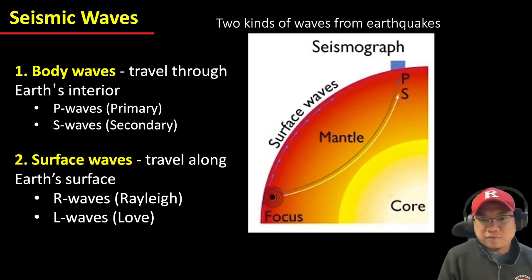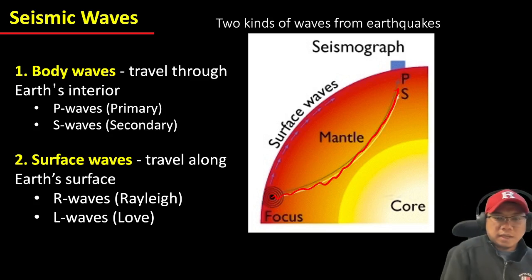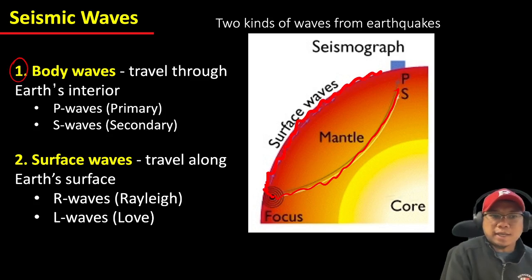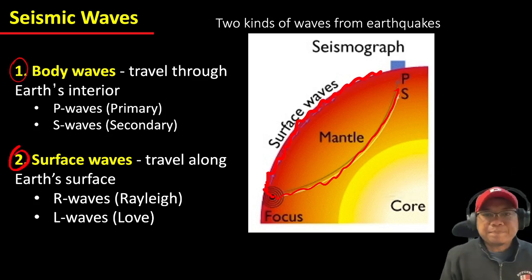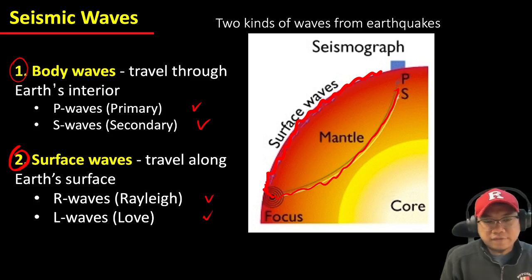Seismic waves are the waves that are generated during earthquakes. These waves can travel inside the Earth, which is called the body wave, and they can also travel along the surface of the Earth, which is called the surface wave. We can subdivide each seismic wave type into two: for body waves, we have P waves and S waves; for surface waves, we have R and L waves, and we're going to see each of them in the next few slides.